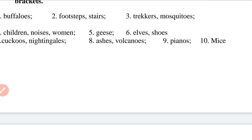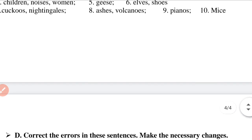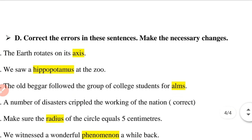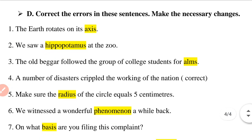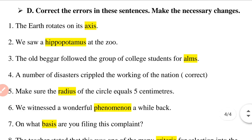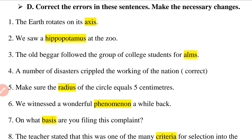Now go to question D — correct the errors in the sentences and make necessary changes. Question 1: 'The earth rotates on its axis — A-X-I-S.' There was a spelling mistake; axis is spelled A-X-I-S.